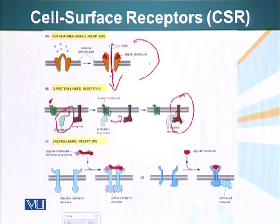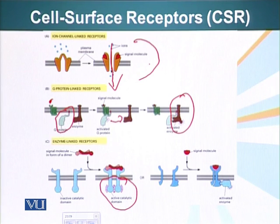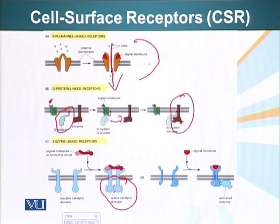The effector molecule is generally an enzyme which is activated by the G proteins. Enzyme-linked receptors generally dimerize when they bind their ligand. When these two receptors come together, they either have enzymatic activity themselves or they recruit other proteins in their cytoplasmic domain with enzymatic activity. These enzymes generally act as kinases and attach phosphate groups to other molecules in the cytoplasm, thereby activating them.